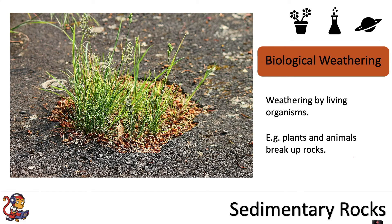The first is biological weathering, and this is weathering by living organisms — so it's when plants and animals break up rocks into smaller pieces. For example, this plant growing within this rock here: the roots will grow down and gradually over time break apart the rock into smaller sediments.